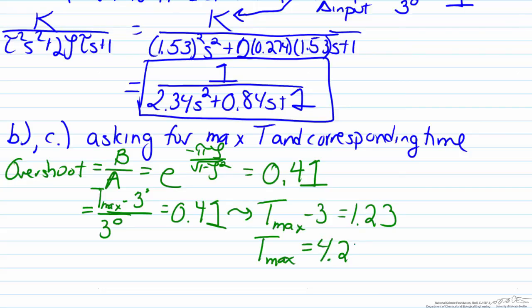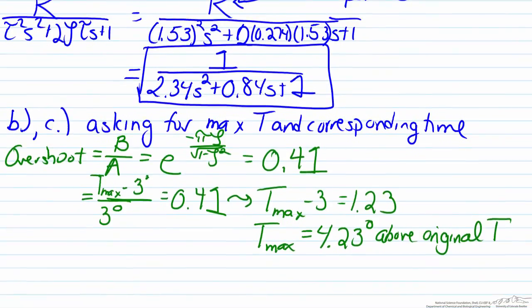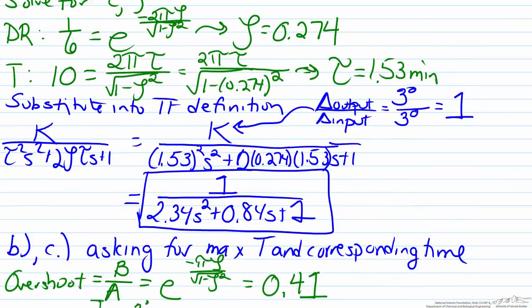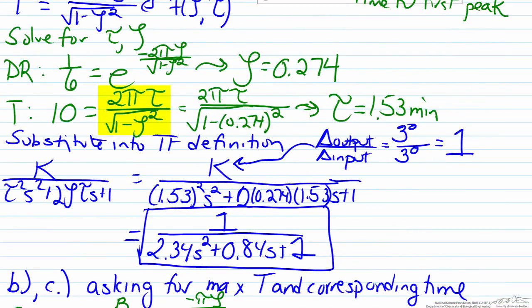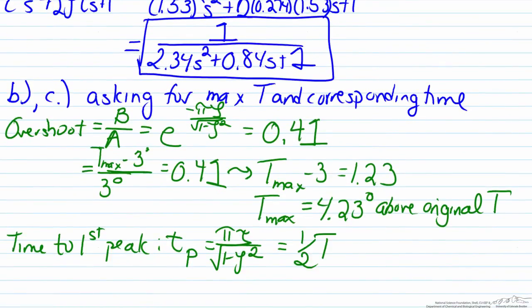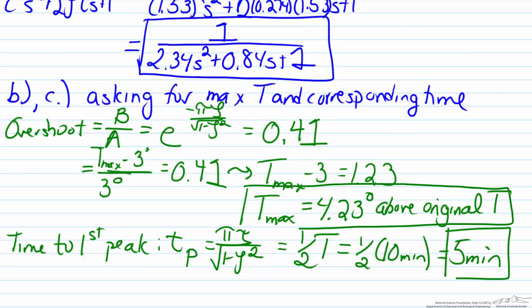Finally, to find the time to the first peak, often represented as tp, this equation is just pi tau over the square root of one minus zeta squared, which is also very closely related to, if we look above, very close to the definition of the period, it's only half of the period equation. So without doing all the calculations, we can easily say that this is half of the period, which we found earlier to be ten minutes. So therefore, the time it will take to see the maximum temperature, which is 4.23 degrees above the original temperature, will occur at five minutes.